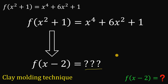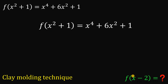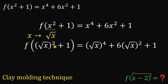I will show you how to use the clay molding technique. So the goal is f of x minus 2, and we have here x squared. What we're going to do is mold this x squared into just x. So we need to replace all of this x with square root of x. If we do that, we get f of square root of x raised to the power of 2, which is our x. So we replace x with square root of x — we let all x be equal to square root of x.